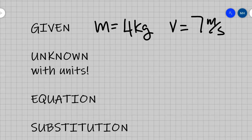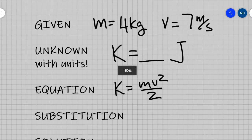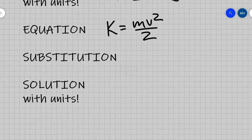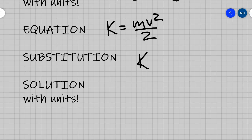So what we're looking for is K, and we know it's going to be in joules. Our equation is K equals mv squared over 2. So then we're going to substitute. That means K equals 4 times 7 squared divided by 2. When you plug that into your calculator with parentheses, 4 times 7 squared, close parenthesis, you get your answer.